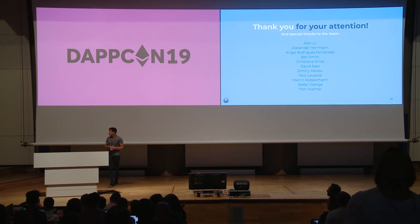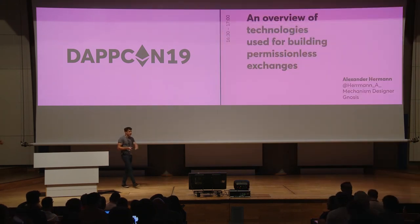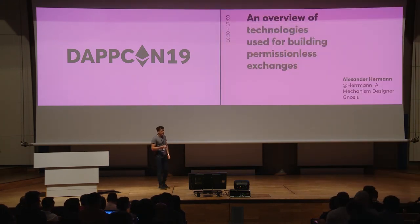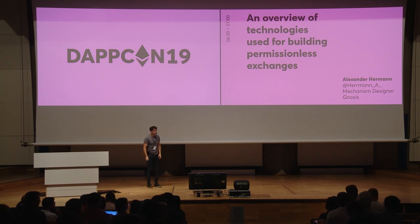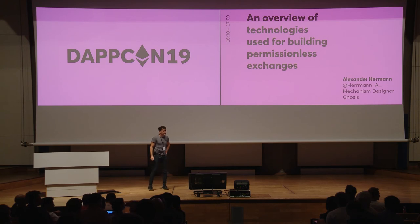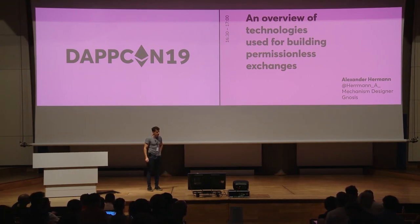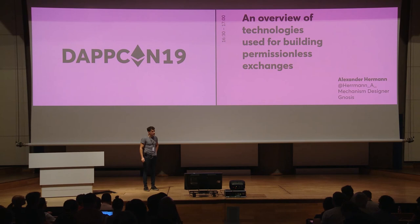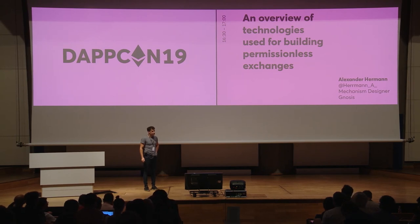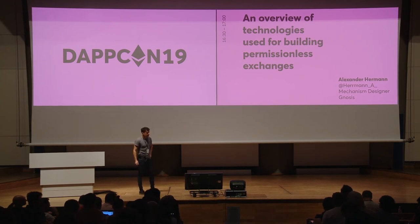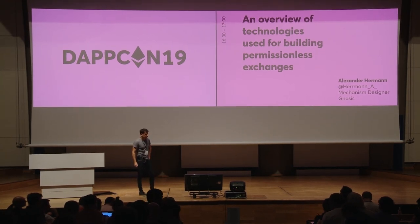We have time for some questions. Question from the audience: you mentioned the front-running problem like gas auction front-running, but there is also a miner front-running problem — malicious miners can insert their own transactions into batches before execution of traders' transactions. Do we have an effective mechanism for preventing it for on-chain order books or x*y=k markets?